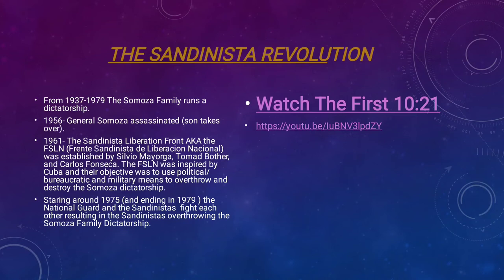The conflict started to pick up around 1975 and ended in 1979. The National Guard and the Sandinistas fought each other — they were already opposing the government, but things really started to heat up around the mid-70s, escalating rapidly in the year before the final conflict. The result was that the Sandinistas were able to actually overthrow the Somoza family dictatorship.